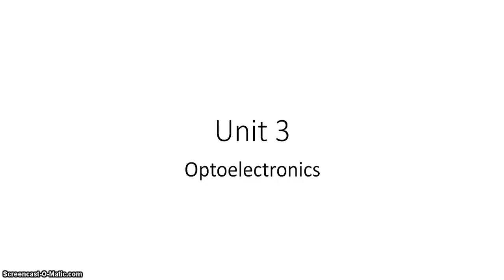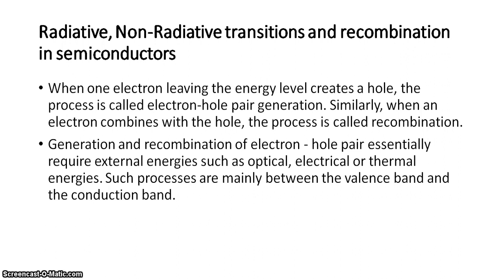In today's class we will be studying optoelectronics, that is Unit 3. In optoelectronics, first we shall see what is radiative and non-radiative transitions and recombinations in semiconductors. In the previous unit we have studied in detail the working of a pn junction. Let us try and understand what is radiative and what is non-radiative transitions.